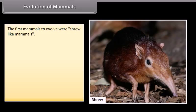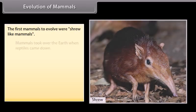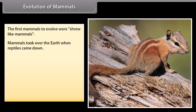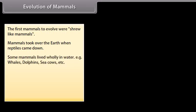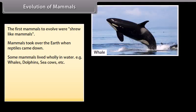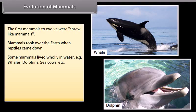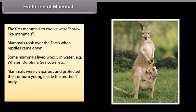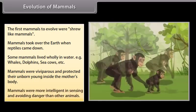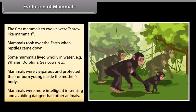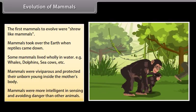The first mammals to evolve were shrew-like mammals. Mammals took over the earth when reptiles declined. Some mammals lived wholly in water — for example, whales, dolphins, and sea cows. Mammals were viviparous and protected their unborn young inside the mother's body, and were more intelligent in sensing and avoiding danger than other animals.